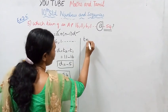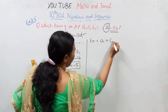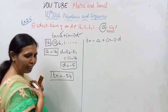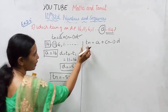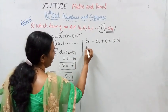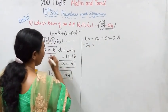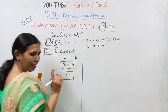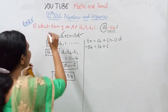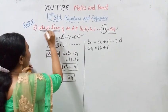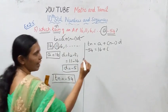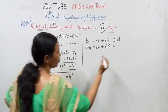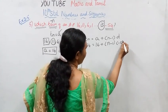TN equal to A plus N minus 1 into D. TN value is minus 54. So minus 54 equal to 16 plus N minus 1, D is minus 5.